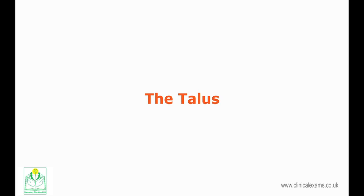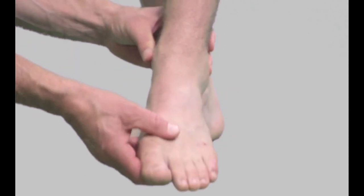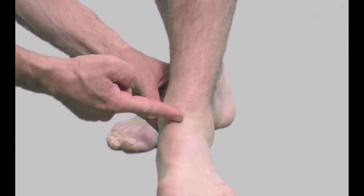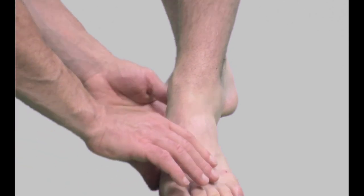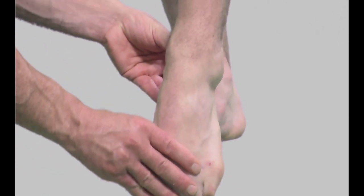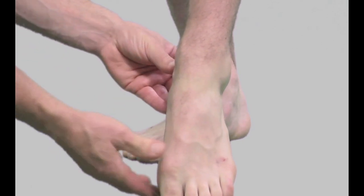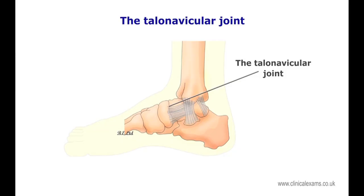The talus forms a hinge-like joint located between the malleoli of the tibia and fibula. Most of its superior surface is covered by the distal tibiofibular joint, unless the foot is held in full plantar flexion. In this position, between your thumb and index fingers, you will feel the anterior part of the head of the talus. Directly anterior to the talus, you can feel the talonavicular joint.